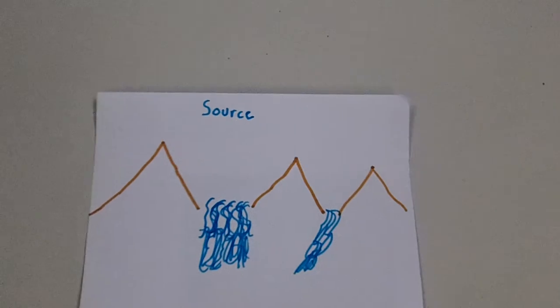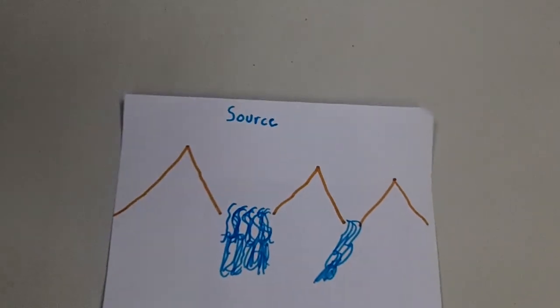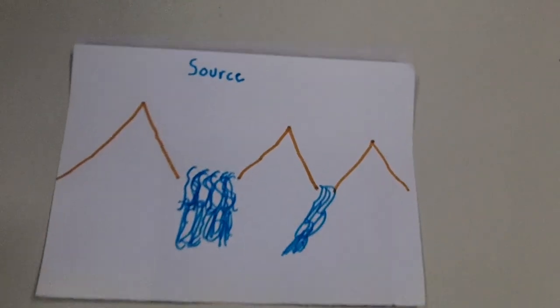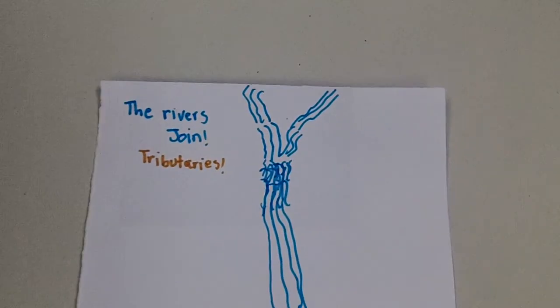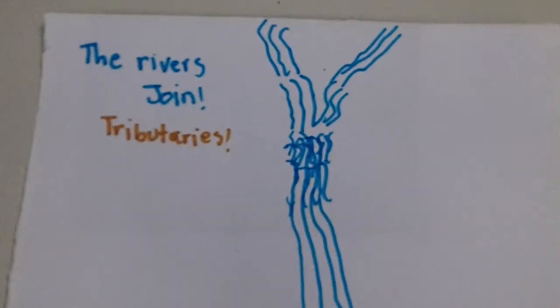It starts off at the source where the water runs down from the mountains and makes a river. The river joins, also known as tributaries.